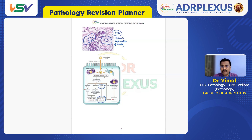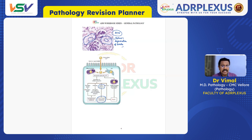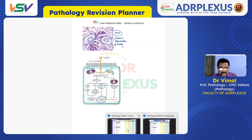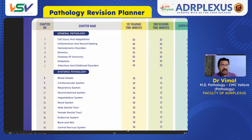If you feel certain points are better covered in the VSV book — more appealing or with a few more points added — you can use that. But fix this decision in the first or second revision so that in the third revision you know exactly where to go for these tables. Similarly, this approximate time framework applies to all other chapters.